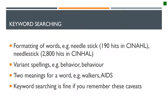We also need to think about words that have different meanings. For example, if you do a search in PubMed for AIDS, even if you capitalize all the letters, you're still going to get results for visual aids, hearing aids, and diabetic aids, in addition to articles about the disease AIDS.